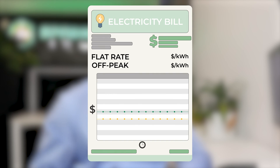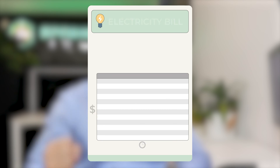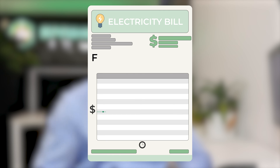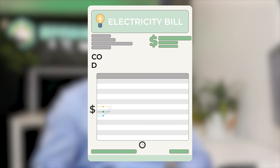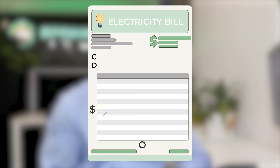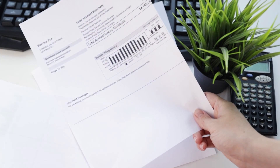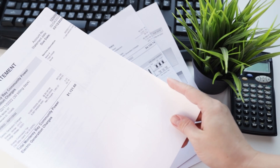Flat rate electricity bills with off-peak, flat rate electricity bills with demand charges, commercial flat rate bills, and also large-scale commercial bills with all sorts of charges on them. These can be the most complex bills to understand and we will go through these in detail. Unsure what bill you have? Follow on for us to explain the different bills for you.